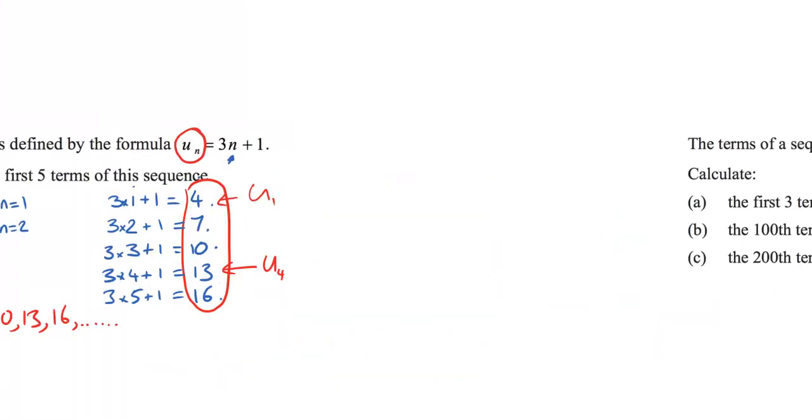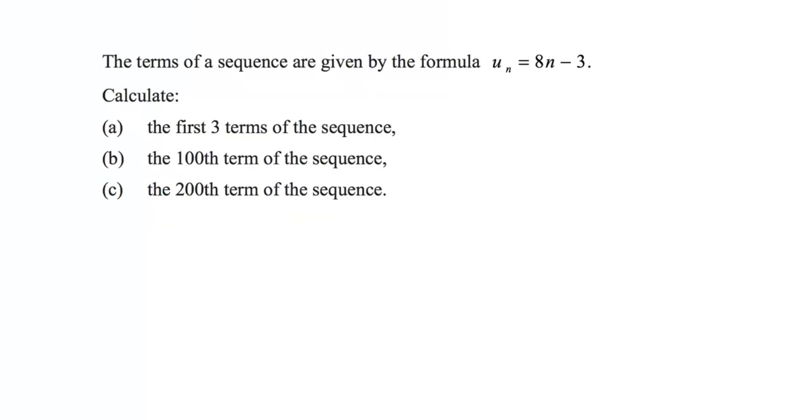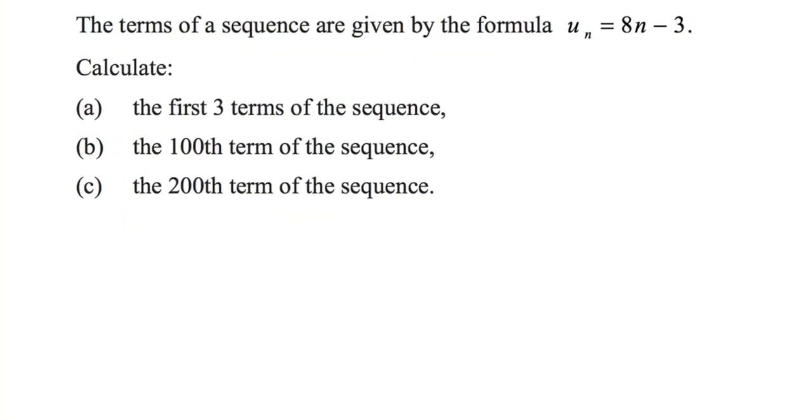Let's take a look at another example. We have another one here. The terms of a sequence are given by the formula U_N equals 8N minus 3. So A is very similar to the last question. Let's calculate the first three terms in the sequence.